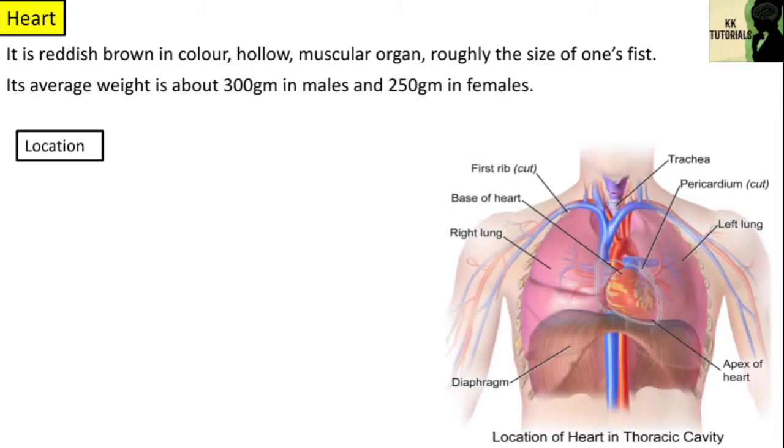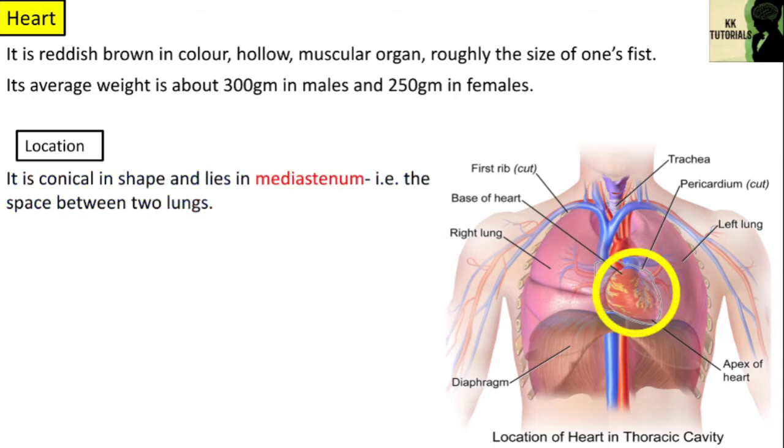It is conical in shape and lies in mediastinum, that is the space between two lungs, right lung and the left lung.